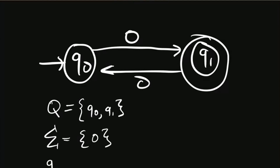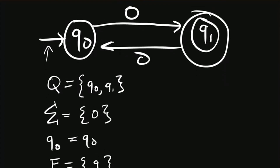This alphabet has zero in it. What is the start state in this machine? It's Q0, because it has the incoming arrow to it. What is the set of final states? Just Q1 — so it's a set containing Q1. Remember, Q, sigma, and F are all sets, so when you write them out, they must be written as sets.